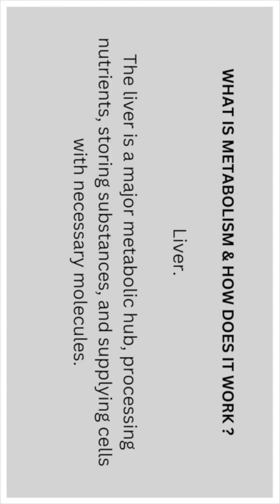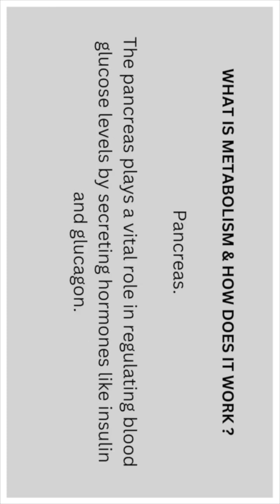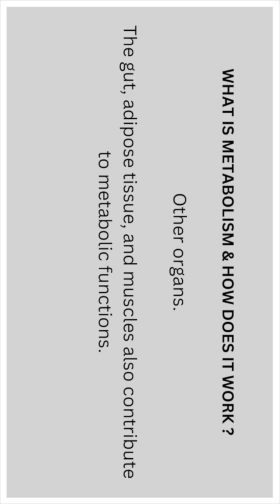The liver is a major metabolic hub, processing nutrients, storing substances, and supplying cells with necessary molecules. The pancreas plays a vital role in regulating blood glucose levels by secreting hormones like insulin and glucagon. Other organs involved include the gut, adipose tissue, and muscles, which also contribute to metabolic functions.